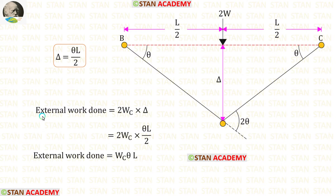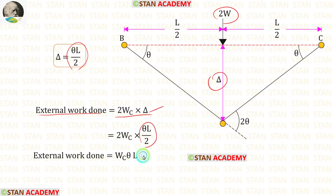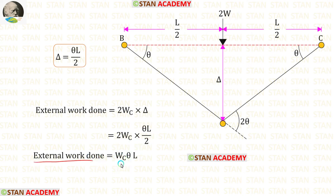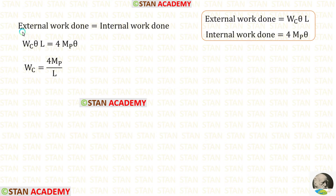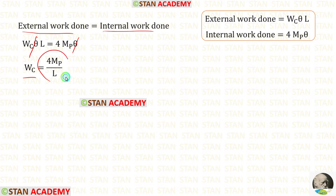Now let us find the external work done. We multiply the load 2W by the displacement delta. Substituting delta equals theta L upon 2, and cancelling the 2, the external work done equals Wc theta L. Equating internal and external work done and cancelling theta, we get the collapse load Wc equal to 4 MB upon L.